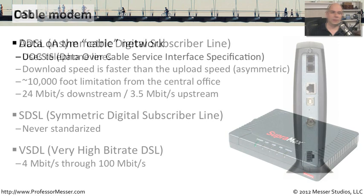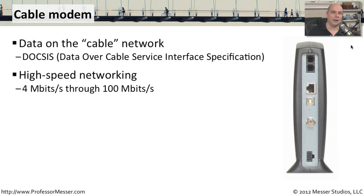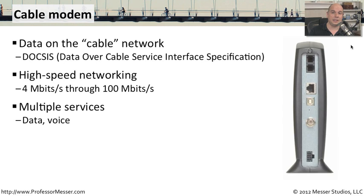If we're bringing digital signals in over old telephone lines, it makes perfect sense that we could also bring digital signals in over a cable connection. Since most homes also have cable television connections, cable companies realized they can provide internet access and data over those connections. This uses a standard called DOCSIS — Data Over Cable Service Interface Specification — which you'll find on your cable modems. Different DOCSIS standards allow data speeds from 4 megabits all the way through 100 megabits per second. You can also send television, internet access, and telephone lines using voice over IP all through the same connection, providing a lot of flexibility over what services you use.